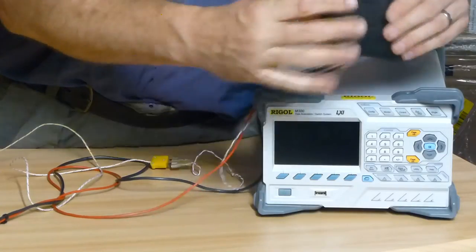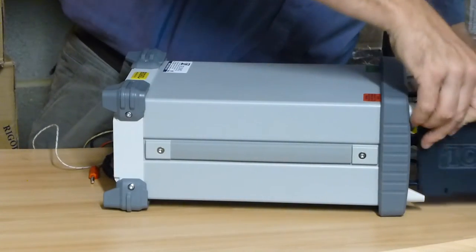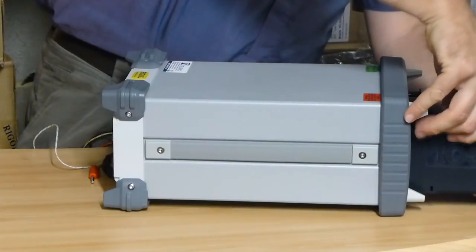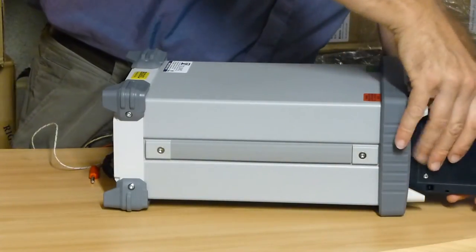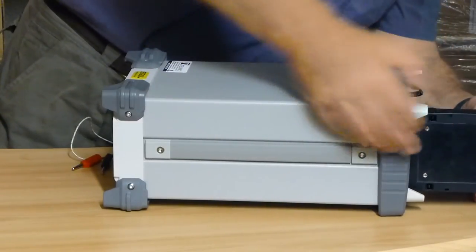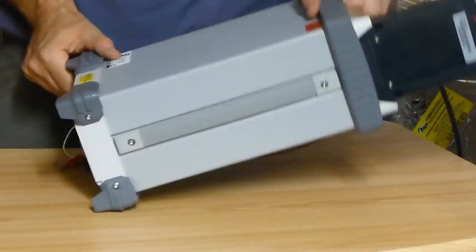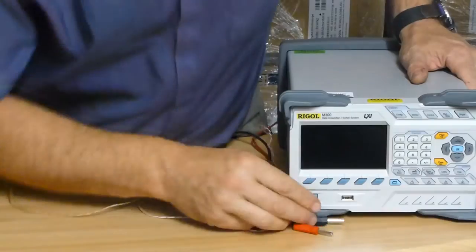And then we're going to take that module and we're going to plug it into the back of the MC module, the multiplexer module. I had it the wrong way around there. That sits snugly on there and it can be locked in place. So there you go. I've now configured that physically.